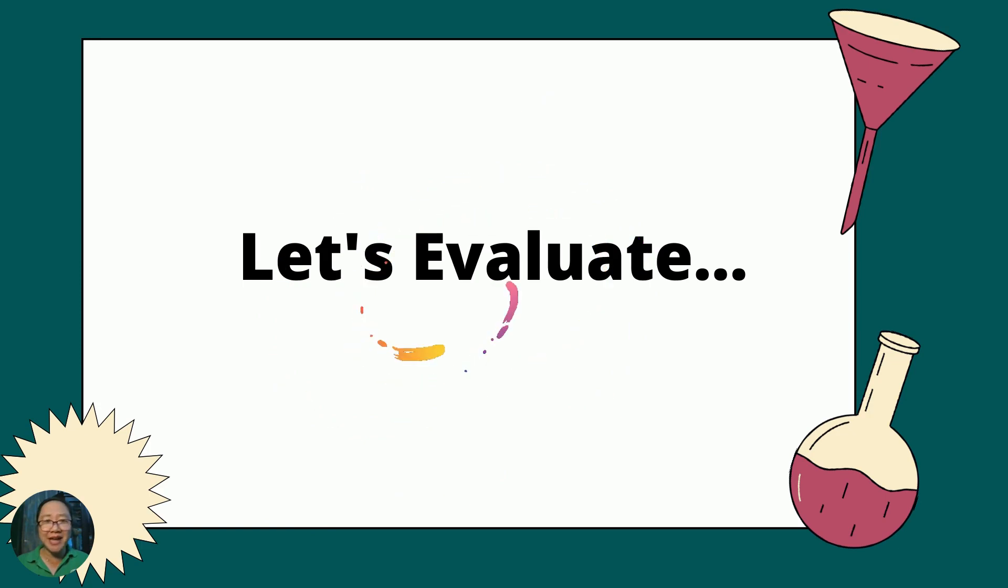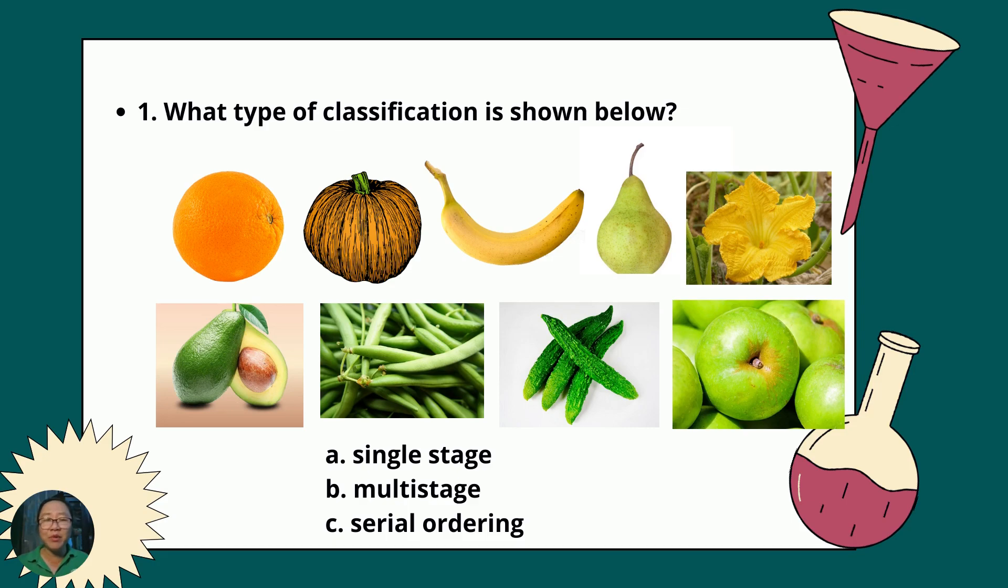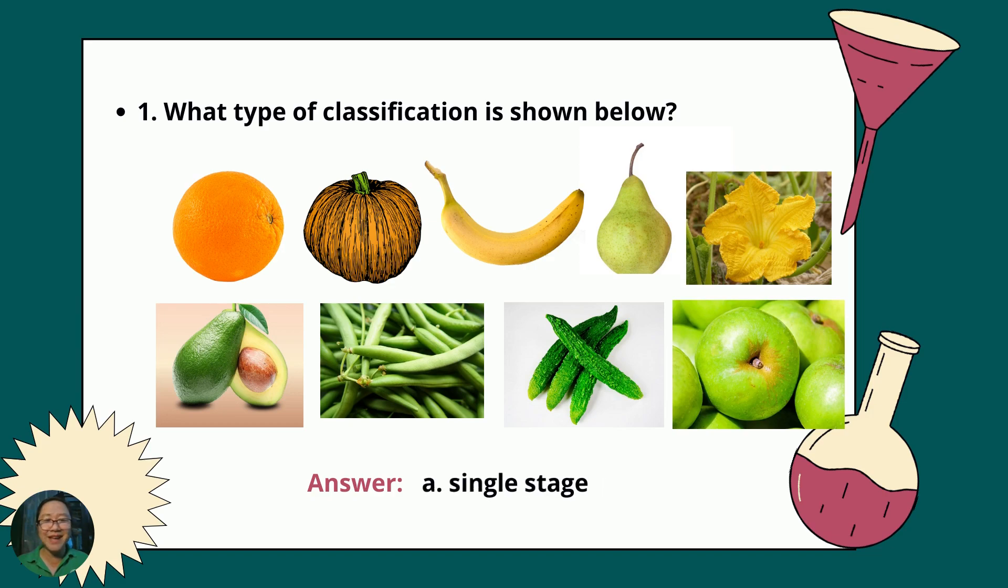Let's evaluate your understanding. Get a piece of paper and open and answer the given questions. Check your own paper. Just be honest. Number 1, what type of classification is shown below? A, single stage; B, multi-stage; or C, serial ordering? What's your answer? The answer is A, single stage. Why single stage? Because we have only one property here. We have in terms of color. So we group the fruits according to their color. We have the yellow group and we have the green group.